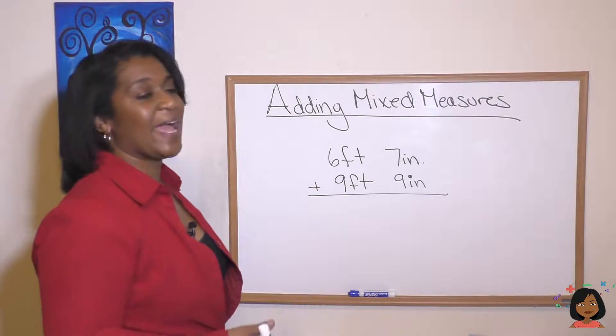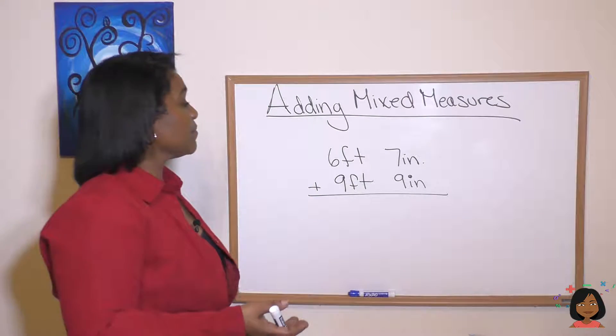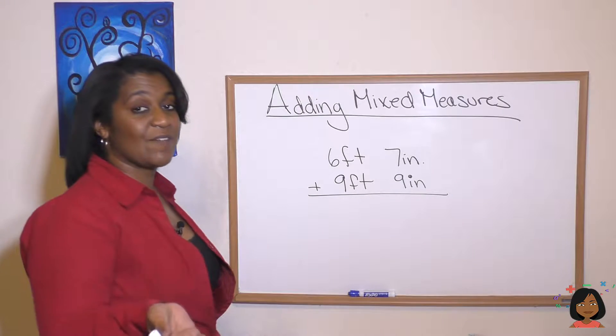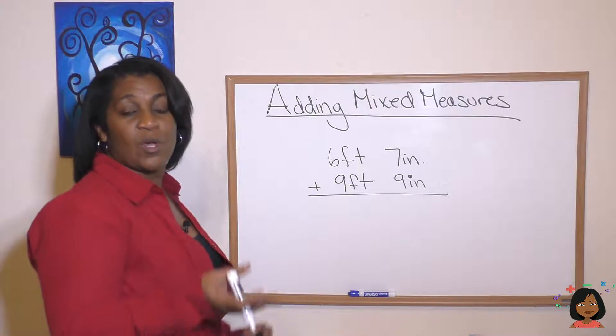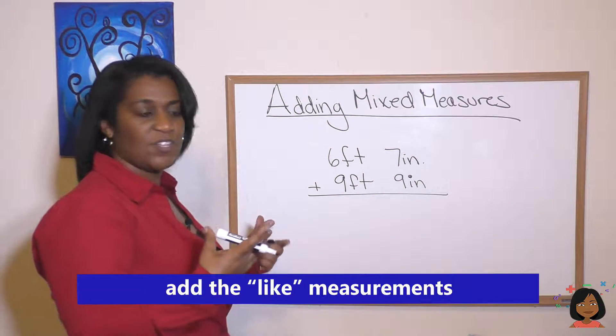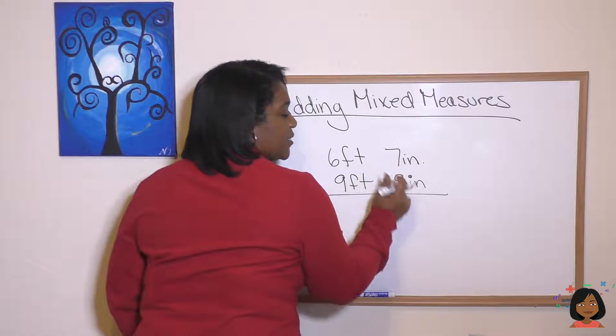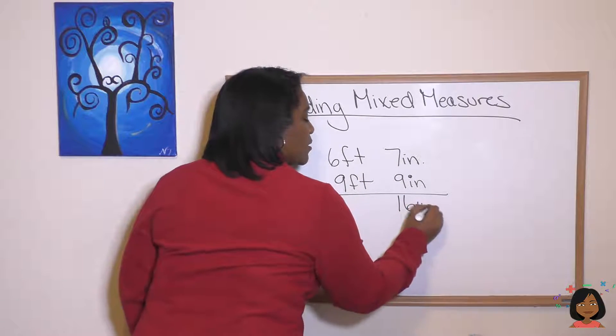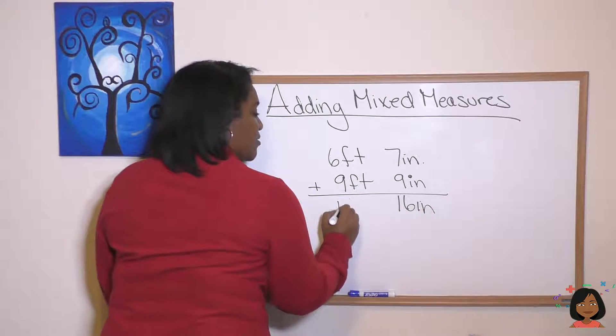Here, I have one for you where we're adding feet and inches. So, let's say we want to add six feet seven inches to nine feet and nine inches. Well, let's add each of the like measurements individually. So, nine and seven is 16 inches, and nine and six is 15 feet.